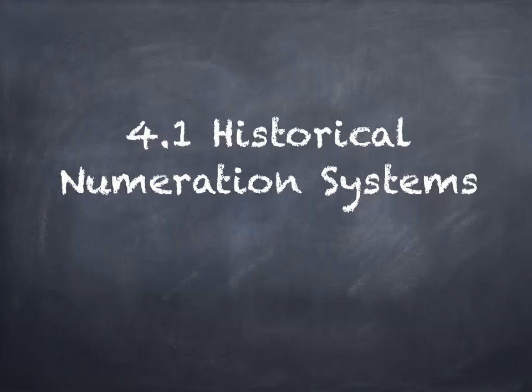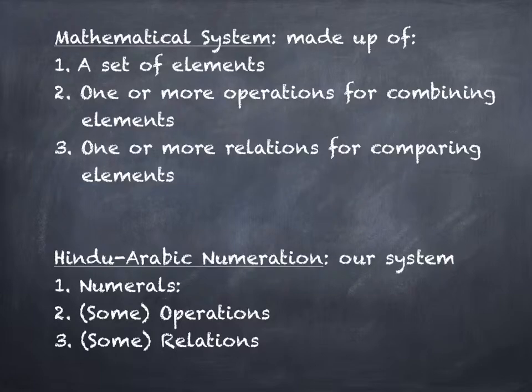All right, we're going to start section 4.1, which is about historical numeration systems. Both 4.1 and 4.2 could almost be combined into one section, except that there would be a massive amount of material for one section, because they're about different numeration systems - different ways that other societies have used numerals. So believe it or not, we have not always used the numbers 0 through 9.